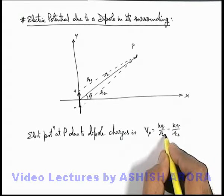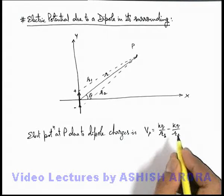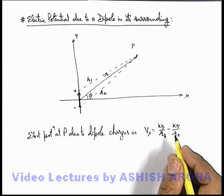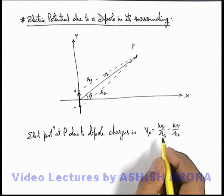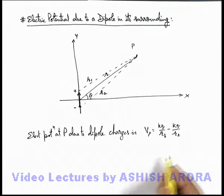As potential is a scalar we know that we simply add all the potentials at a point due to all charges in the surrounding.